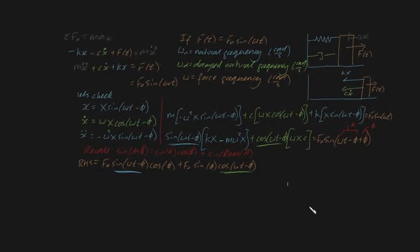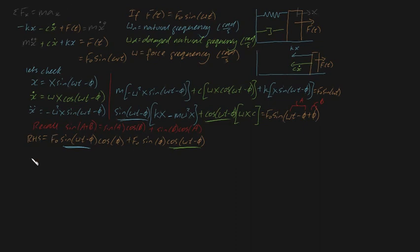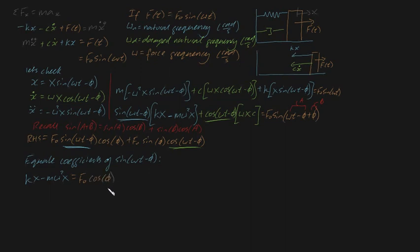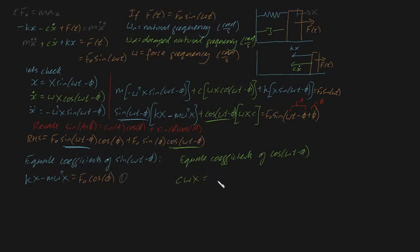If we equate coefficients of sine(omega t minus phi), we get: kX minus m omega squared X equals F₀ cos(phi). We'll call that equation one. If we equate coefficients of cosine(omega t minus phi) from both sides, we get: c omega X equals F₀ sine(phi). We'll call that equation two.